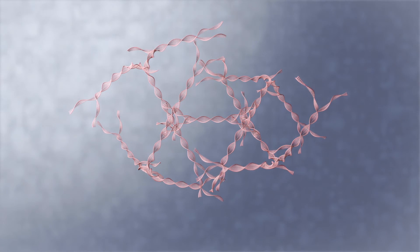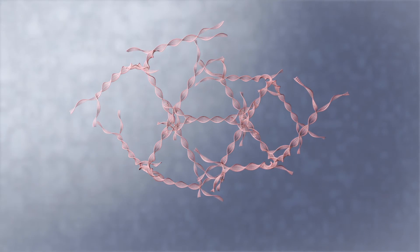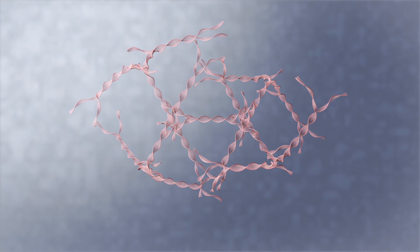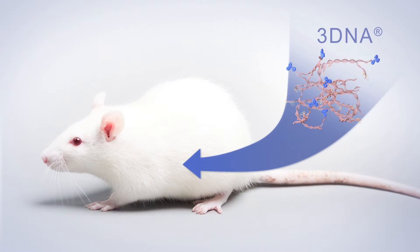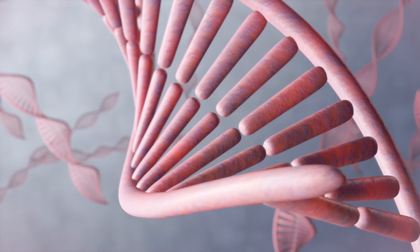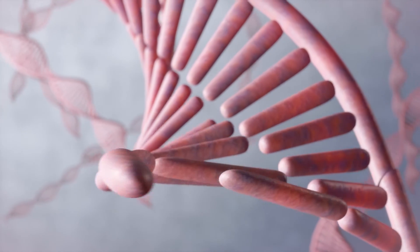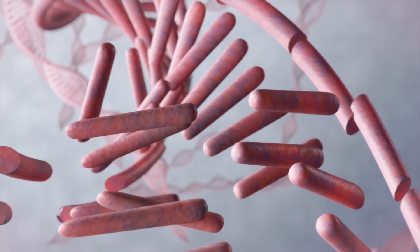For targeted drug delivery, Genisphere uses two-layer 3DNA, which has a diameter of 60 nanometers. Since the nanocarrier is made entirely from DNA, it is biocompatible in vivo using standard biological mechanisms for metabolic breakdown of DNA into non-toxic material.